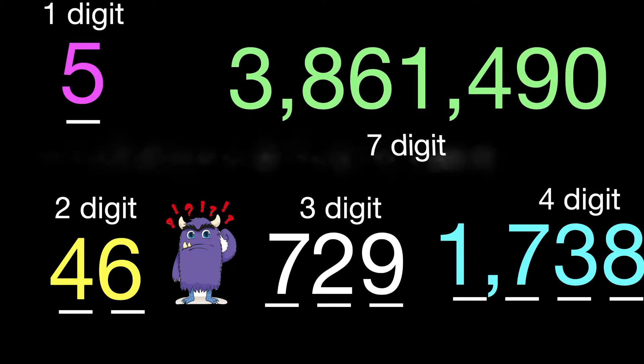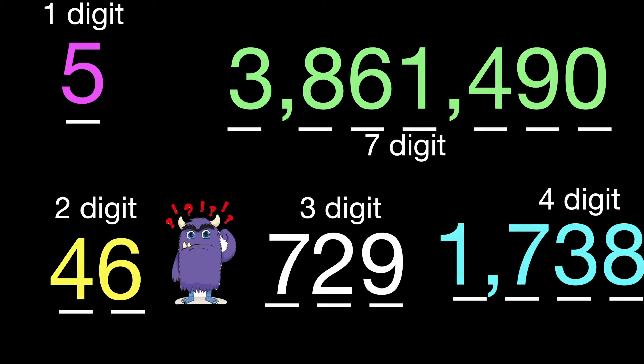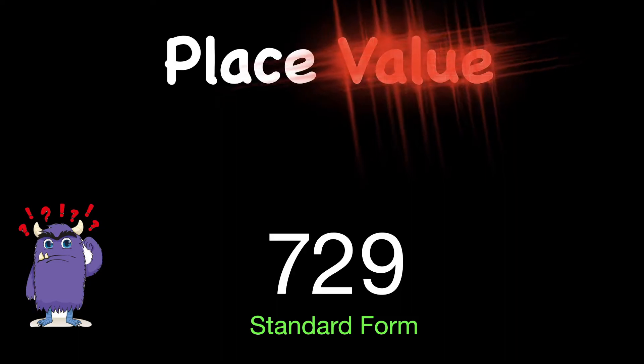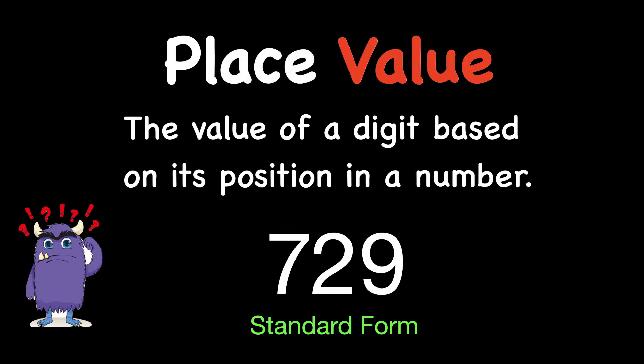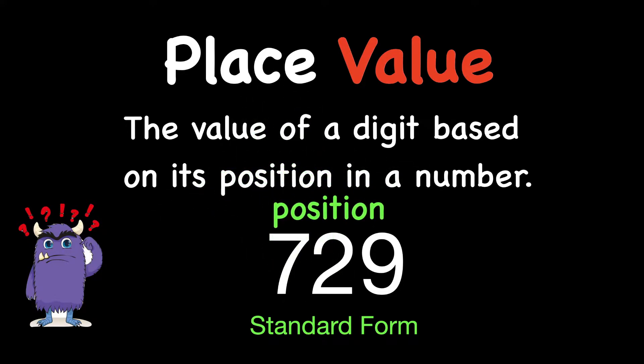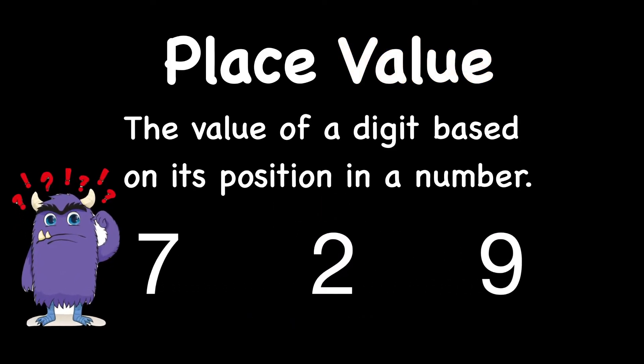And you can even have huge, seven, eight, nine, and even greater digit numbers. So when we talk about place value, the word value just means how much is a number worth. And the value of a digit is based upon its position. The key word there is position. So when we're looking at 729, those three digits or numbers have different positions, and their value is different.